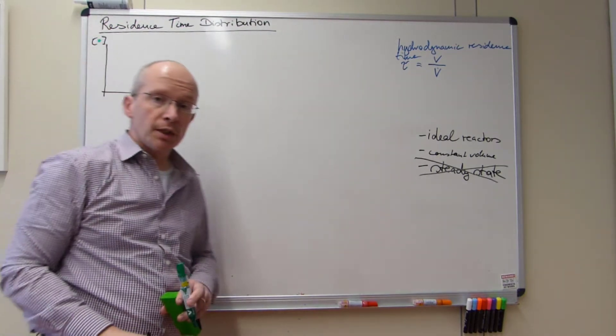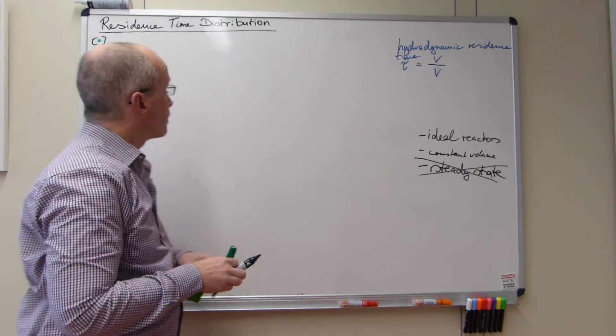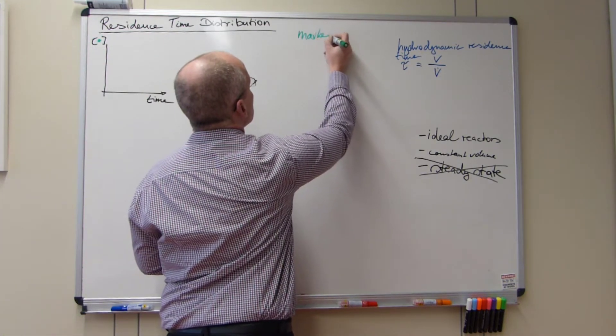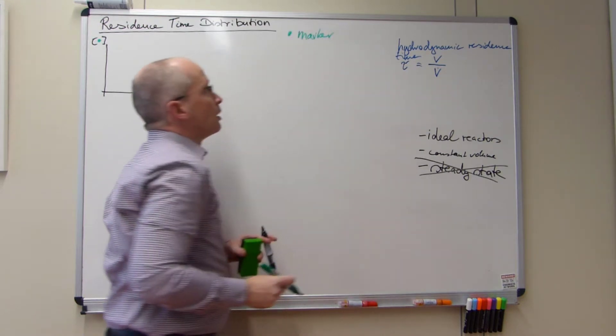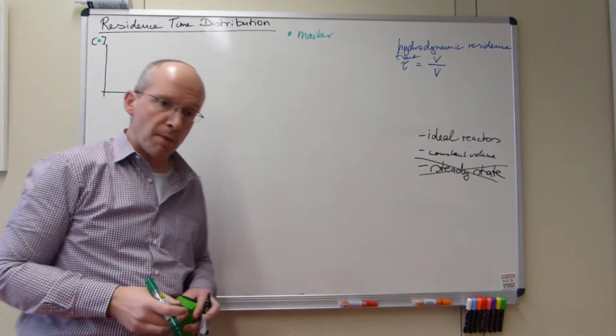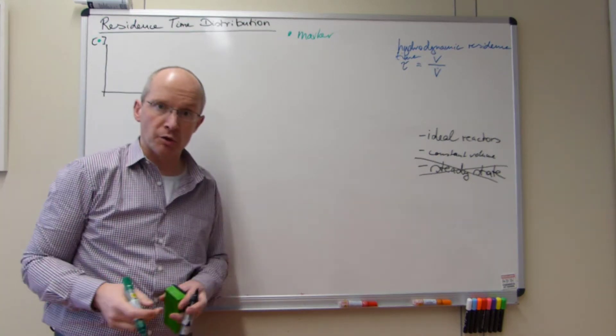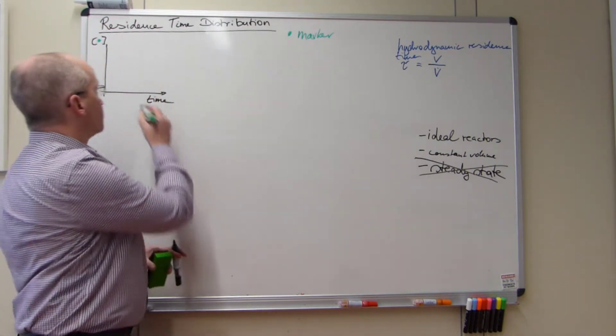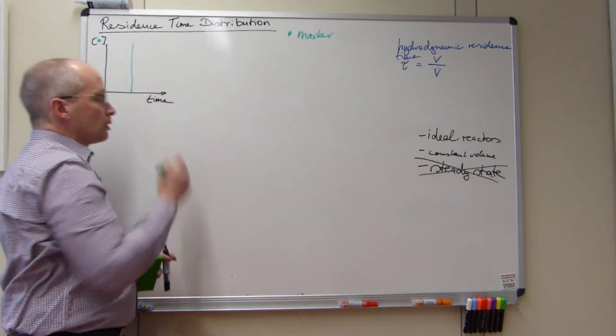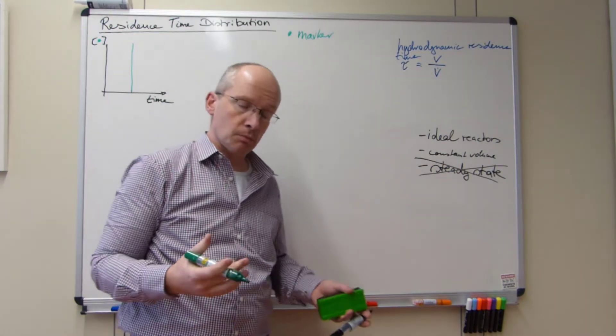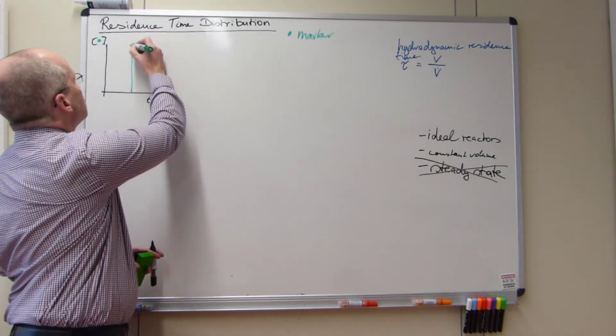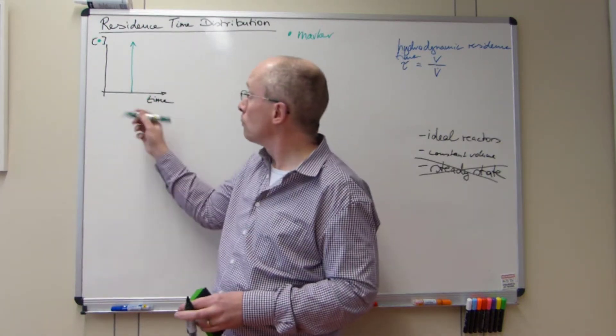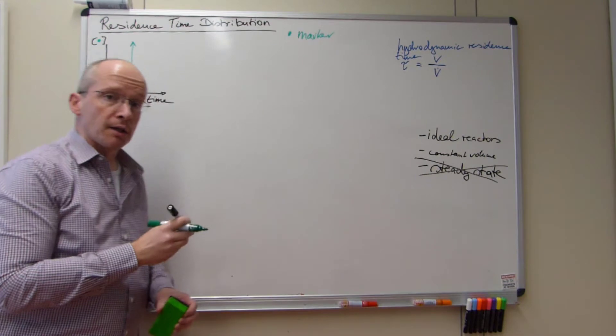So what we will do is to introduce a marker of some kind. And this marker is something we can measure in its concentration. At one point in time we will introduce this marker into the reactor, all at once, which will make this infinitely high. And we will do this for convenience reason at time zero.